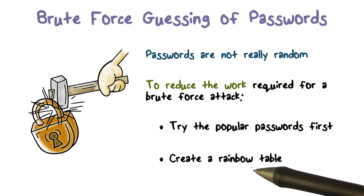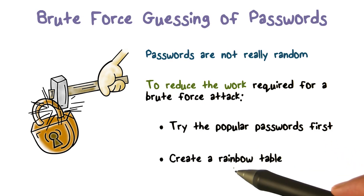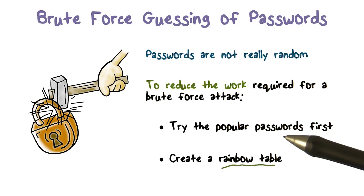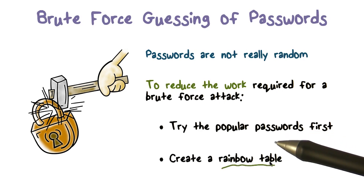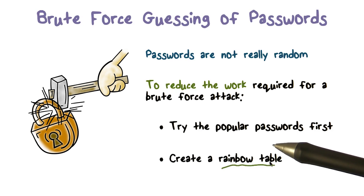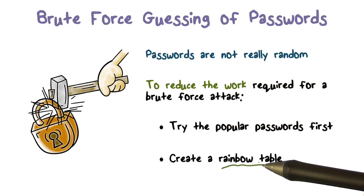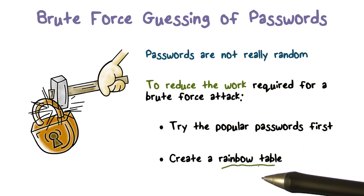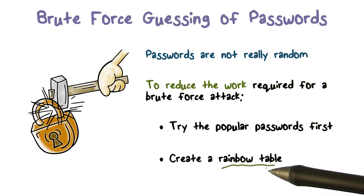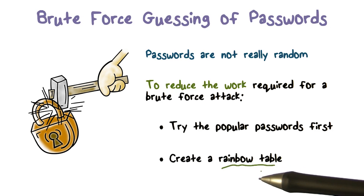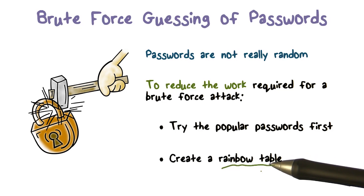In fact, what you can do is create what is called a rainbow table, which is nothing but potential passwords and their hash values. You create a hash value table for each possible password. This way, you don't even have to run your hash function when doing brute force guessing — you're just doing a lookup in a rainbow table to see what the corresponding hash value is.